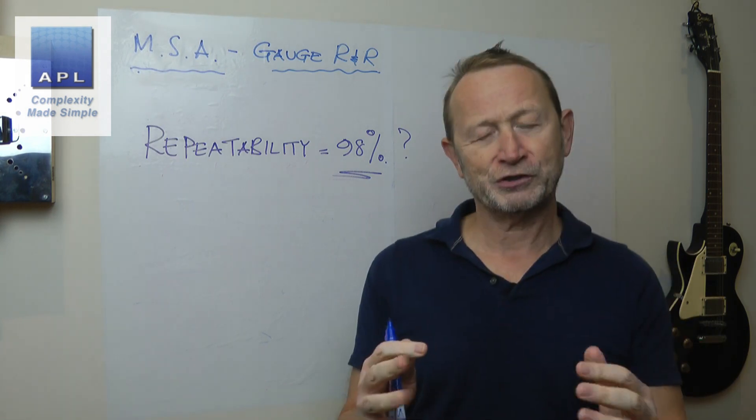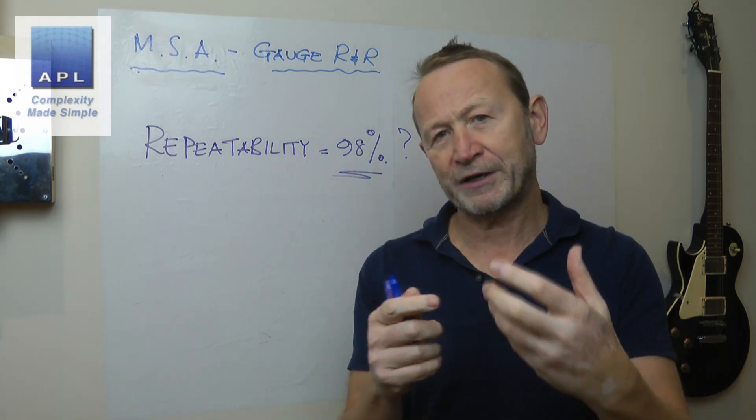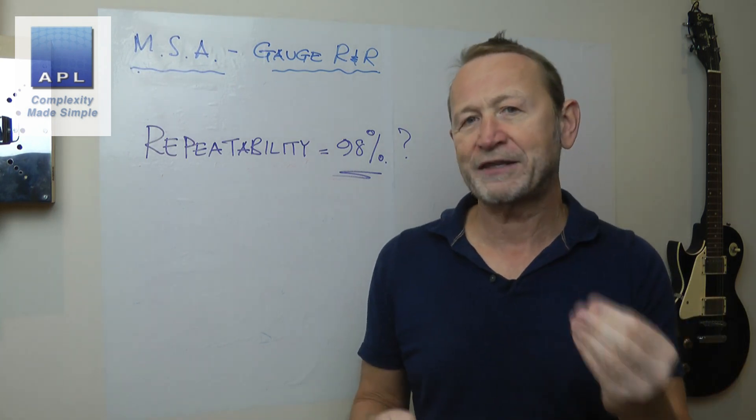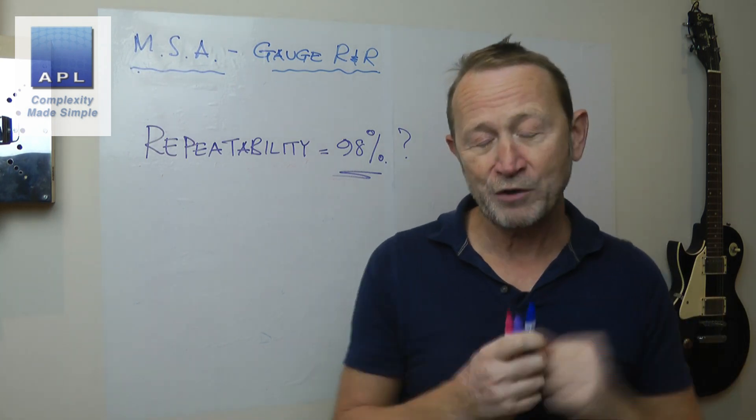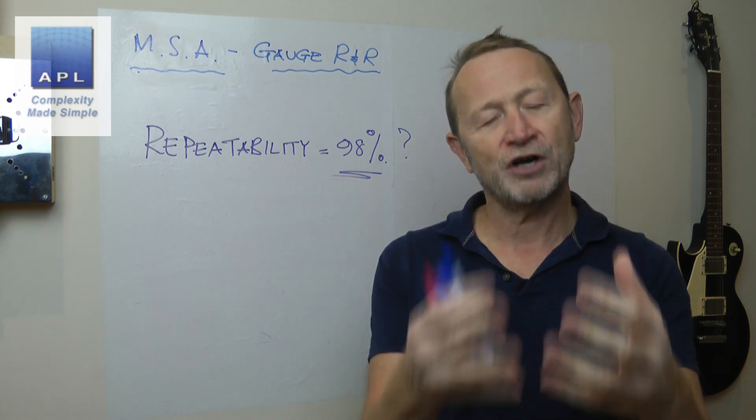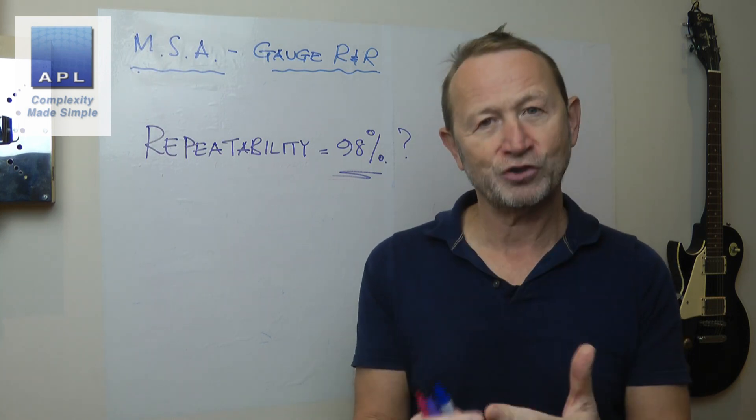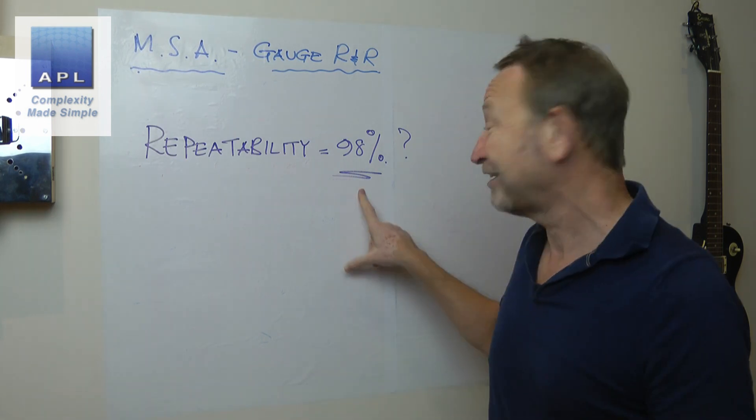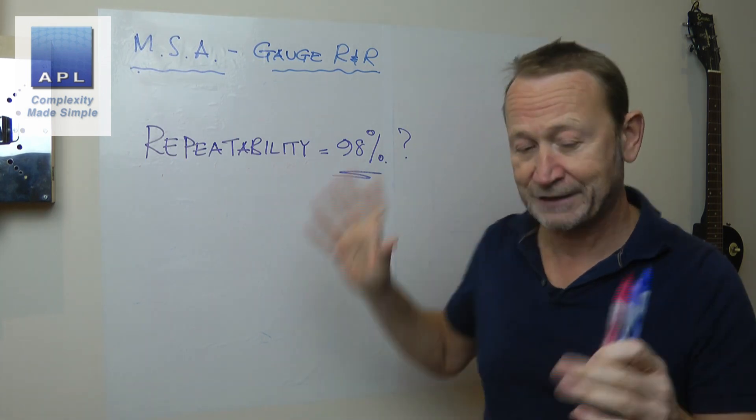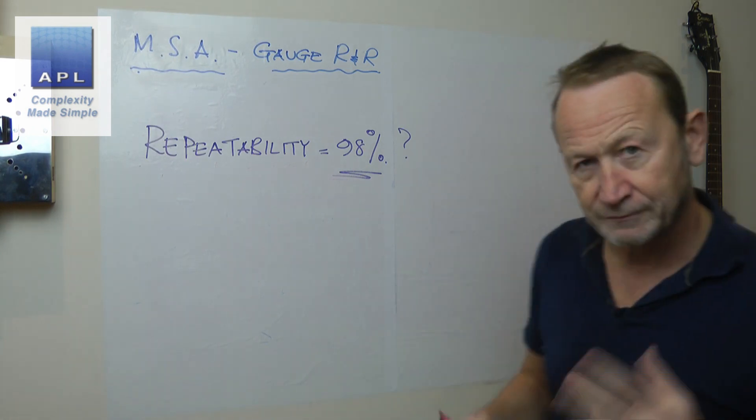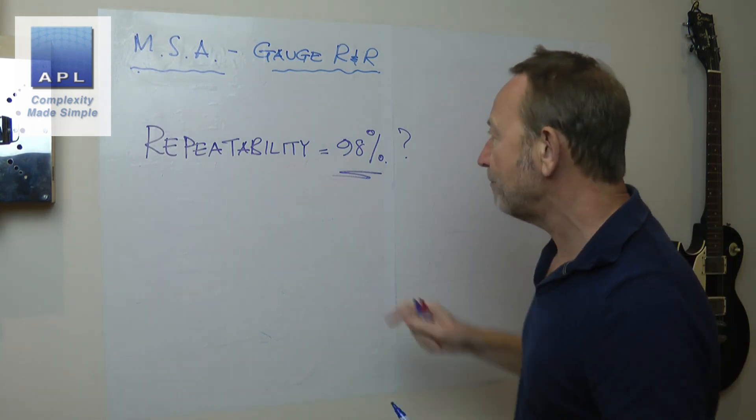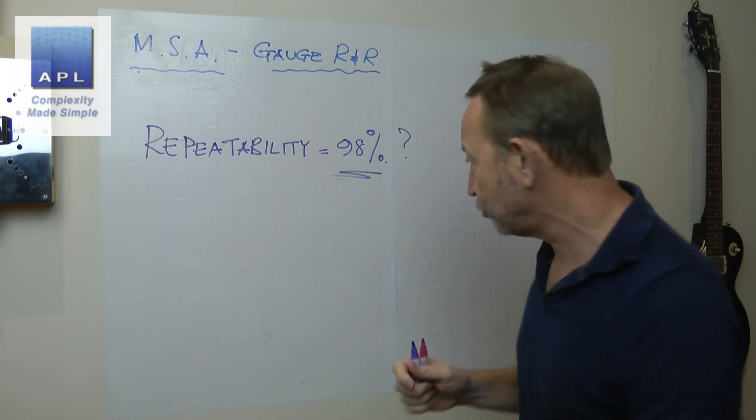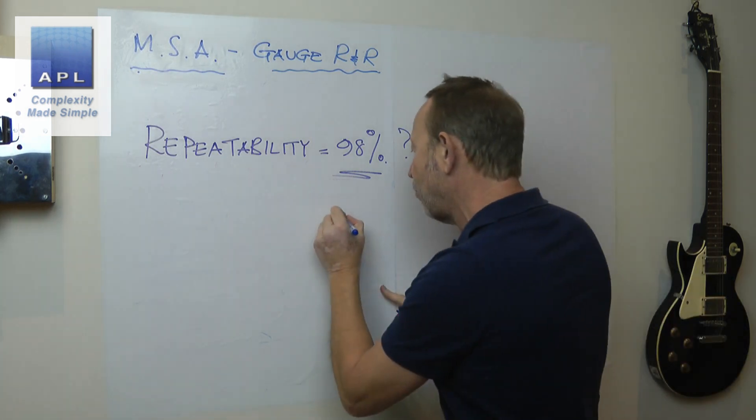Now, before we look at the results, I want to just talk about where these numbers come from. So when it says 98%, I want to talk about where these numbers come from, so that when we look at the data that I've been sent, we'll understand the potential problems in the MSA or the potential problems with the measurement system. Because this could be a genuine result.